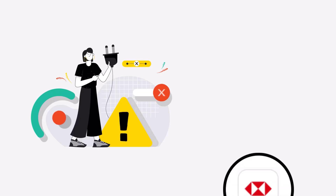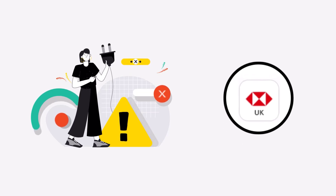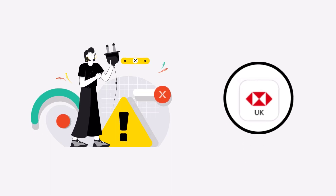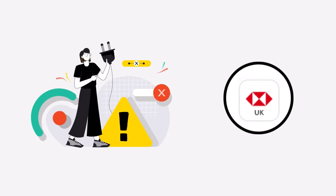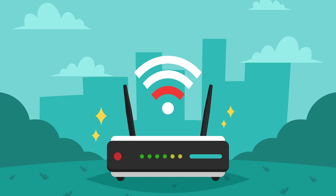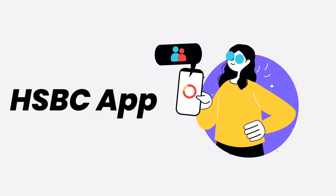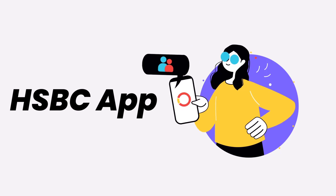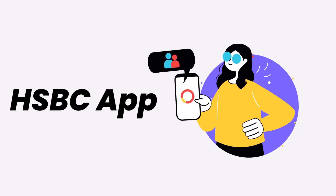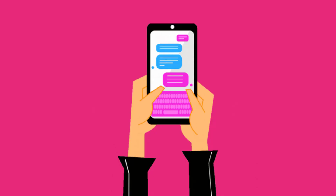It might be possible that you're not able to log in to the HSBC app due to a connectivity issue. So first of all, you need to make sure you have a strong and stable internet connection. To do so, do a quick test to check if your internet is working — simply open up an app that runs on internet other than the HSBC app and check if it's working or not.